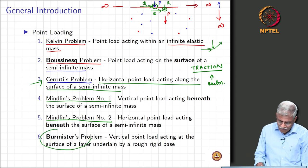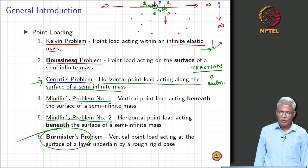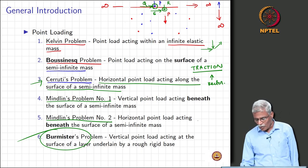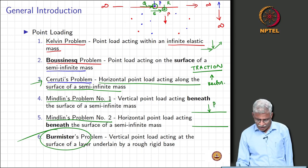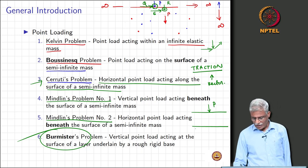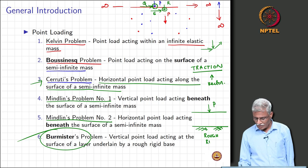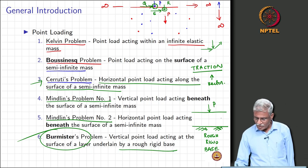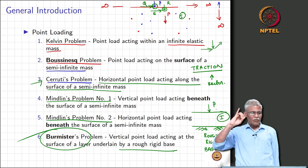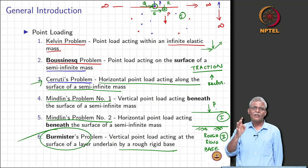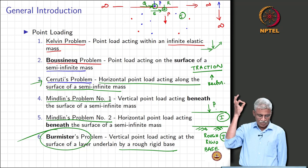Now comes the most important name in pavement engineering: Professor Burmister. What he did was: vertical point load P acting at the surface of a layer underlain by a rough rigid base. Whereas all previous problems dealt with only one layer, now you have layer 1 and layer 2. So we have the Kelvin problem, Boussinesq problem, Cerruti's problem, Mindlin's problem 1, Mindlin's problem 2, and now Burmister's problem.